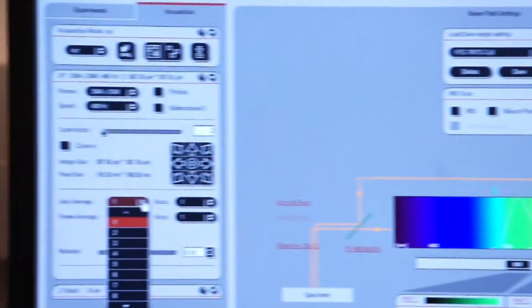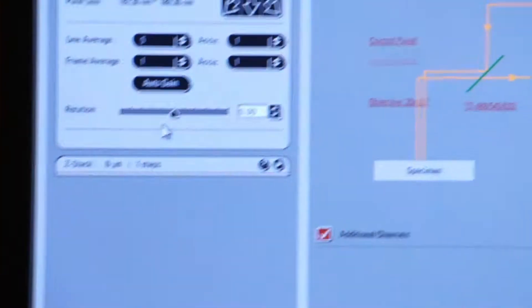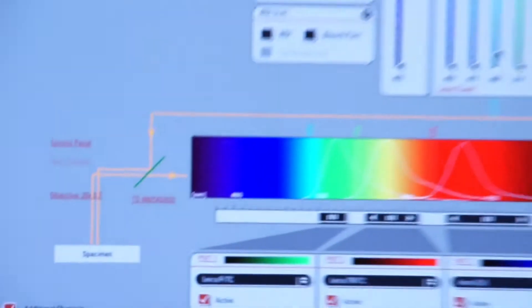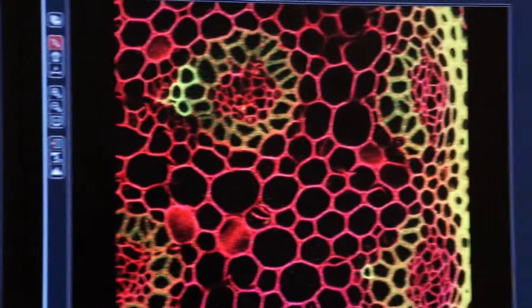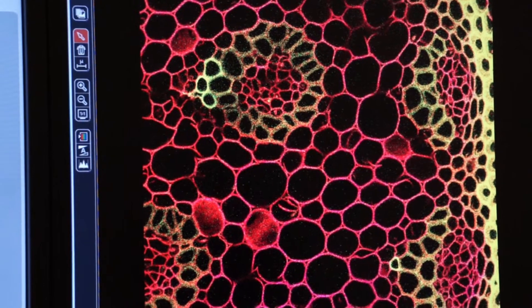So let's go back and engage line averaging. Let's select 5 scans per line. We'll click on capture image again. Watch the right screen and you'll see our new image come up.